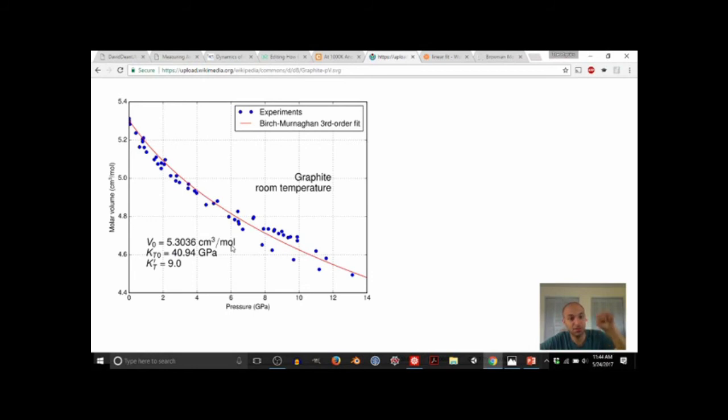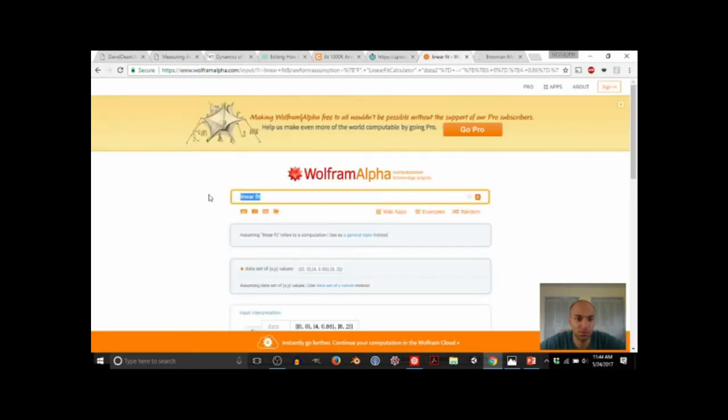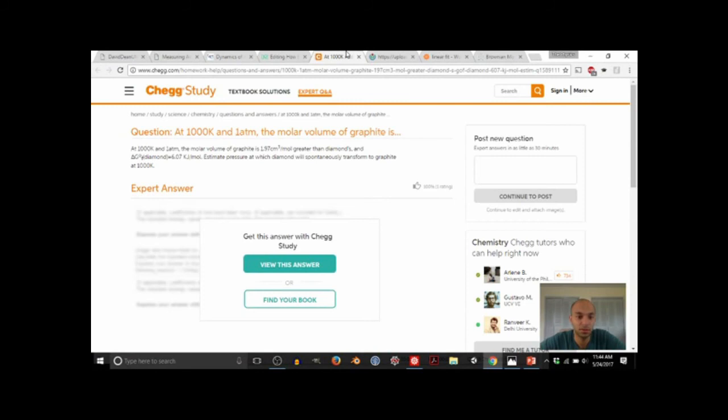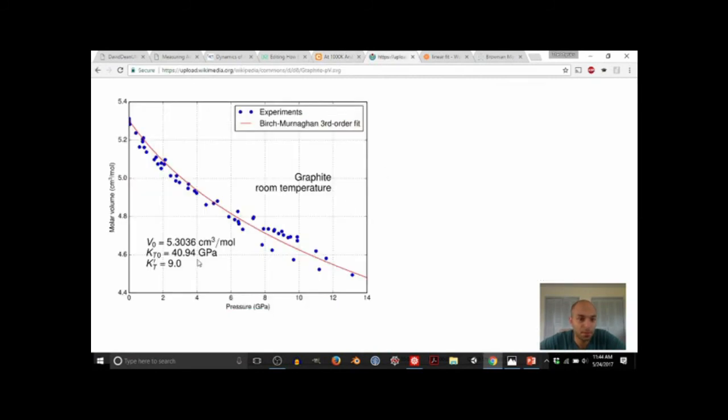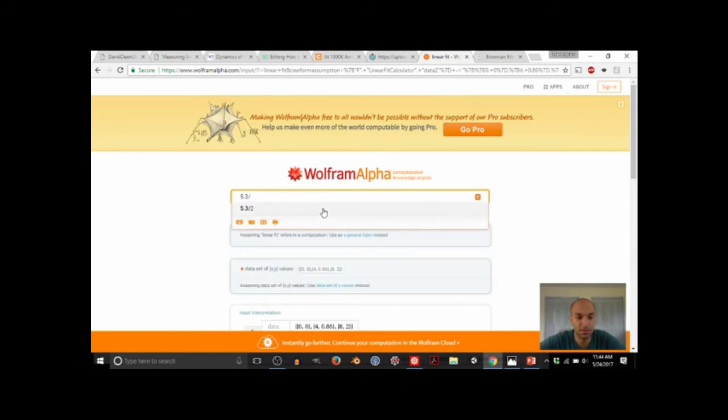So we can use this number and Avogadro's number to measure the volume that an individual molecule has, or an individual atom has. And to do that, I just have to divide the total volume, 5.3, by Avogadro's number. So let's go here, back to WolframAlpha: 5.3 divided by...